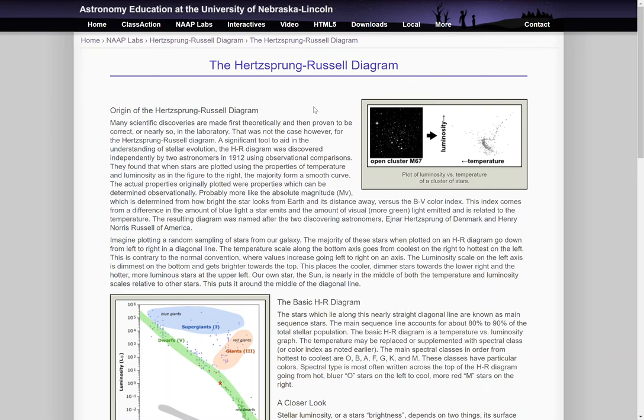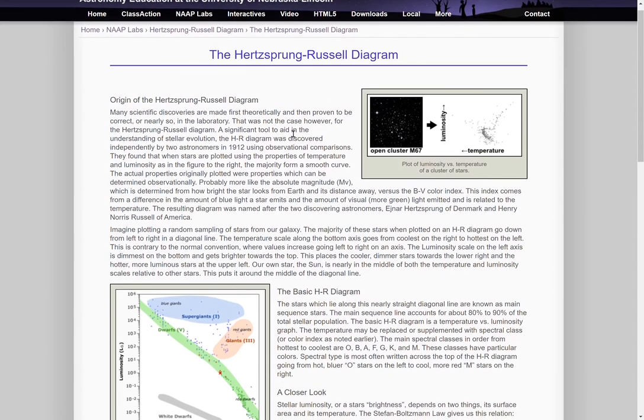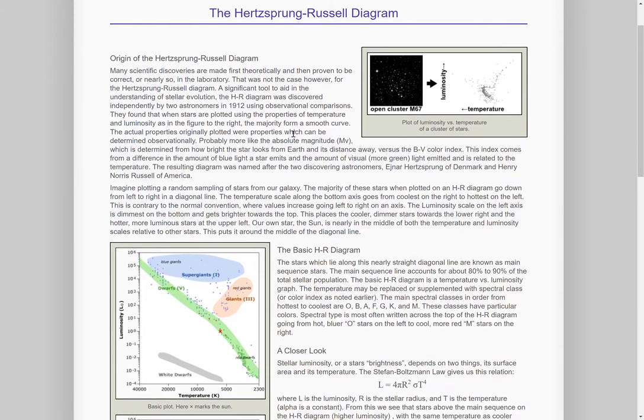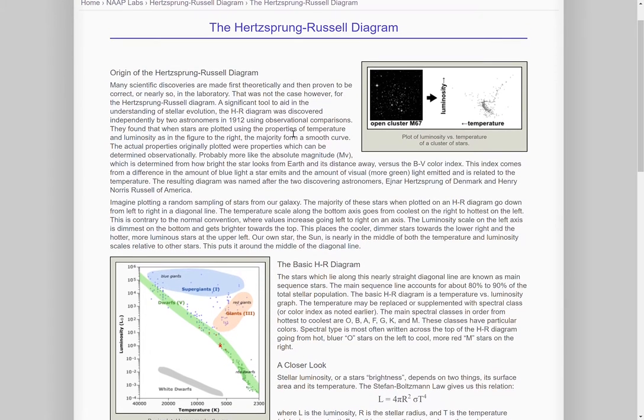Here is a detailed description of the Hertzsprung-Russell diagram. There are other names for this. Sometimes it's called a color magnitude diagram, sometimes it is called a temperature luminosity diagram, sometimes it is called the HR diagram, sometimes it is called the Russell diagram. So a lot of different names but they are all basically the same thing.